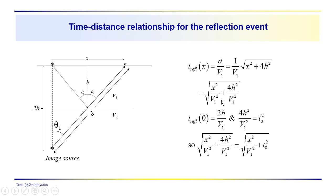Notice that when x equals zero, we get the square root of 4h²/V1², which is just 2h/V1. This is the zero-offset arrival time — the straight up-and-down time — so t0² = 4h²/V1². We can represent this parameter as Tz², allowing us to rewrite the relationship as t² = x²/V1² + Tz².